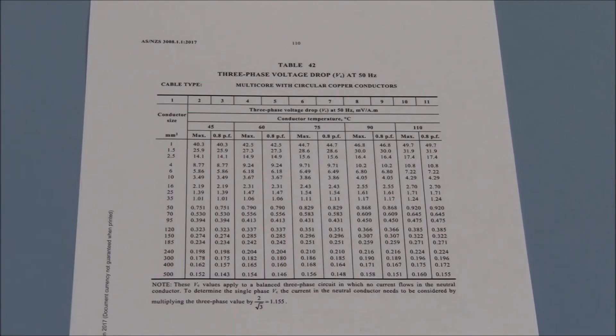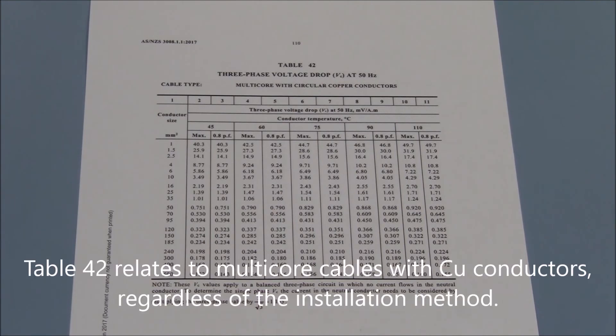We will use the same equation and find the value of VC in table 42 which relates to multi-core cables with copper conductors regardless of the installation method.